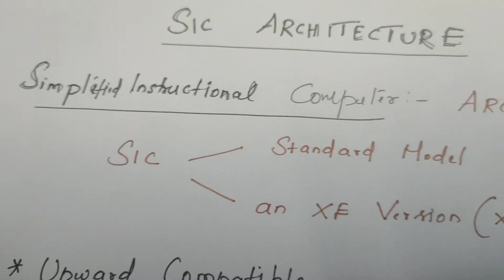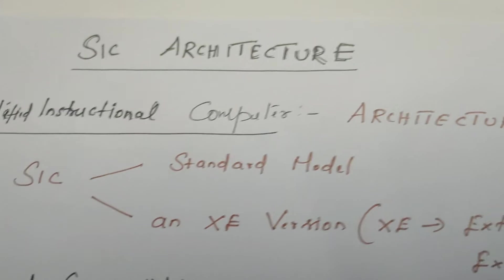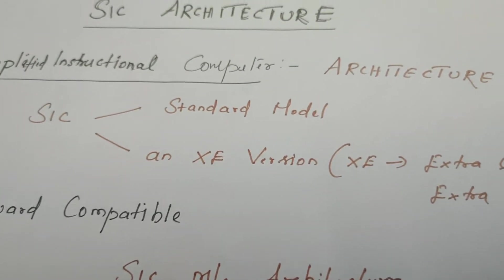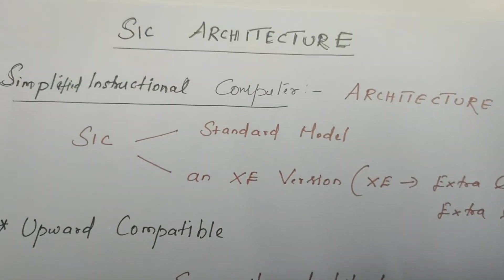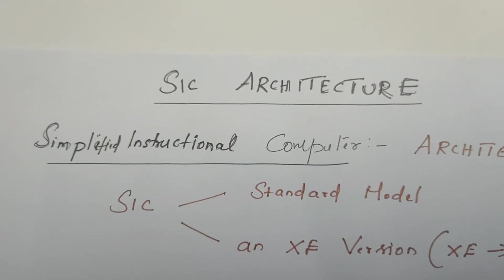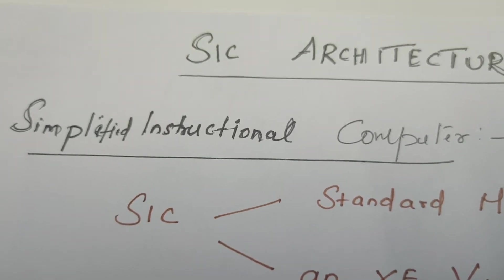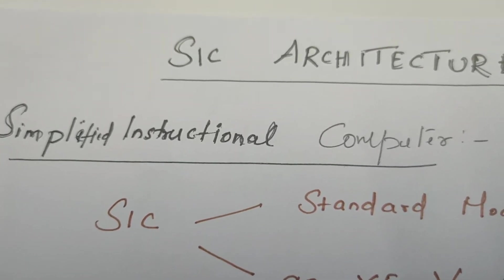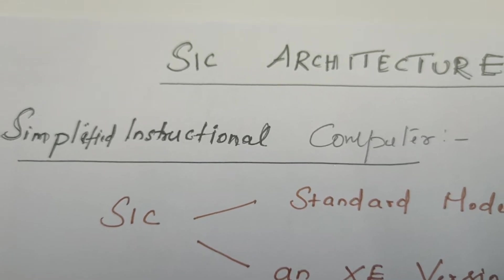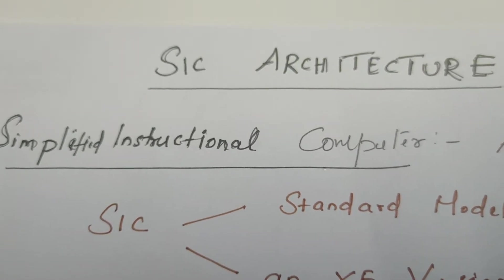Let us try to understand what is SIC. SIC means Simplified Instructional Computer. It is a hypothetical or imaginary computer — it incorporates all the features of other existing architectures. We need to understand this architecture so that it will further help us understand system softwares like assembler, loader, and linker, their functions, algorithms, and needed data structures.